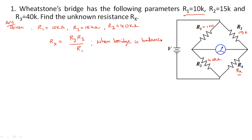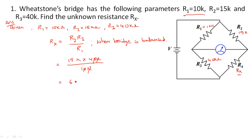When the bridge is in balanced condition, Rx = R2 × R3 / R1. Substituting the values: Rx = (15 kΩ × 40 kΩ) / 10 kΩ = 60 kΩ. So 60 kilo ohms is the unknown Rx value. Very simple formula.